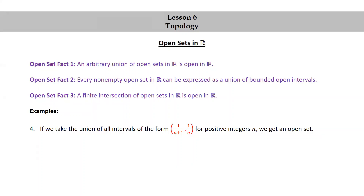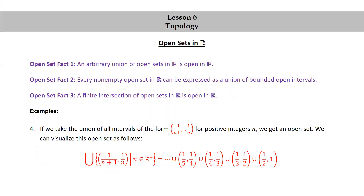If we take the union of all intervals of the form (1/(n+1), 1/n) for positive integers n, we get an open set. We can visualize this open set as follows: ∪_{n ∈ ℤ⁺} (1/(n+1), 1/n) = … ∪ (1/5, 1/4) ∪ (1/4, 1/3) ∪ (1/3, 1/2) ∪ (1/2, 1).